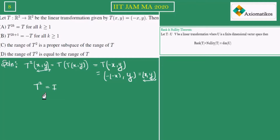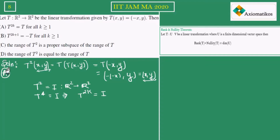The co-domain is R² and the domain is R², so T² is actually the identity operator defined from R² to R². Since T² is identity, T to the power 4 will also be identity, and therefore T to the power 2k will always remain identity. Now option A suggests that T to the power 2k equals T, but that is not happening here. So option A is incorrect.